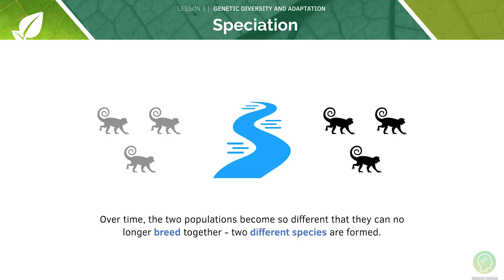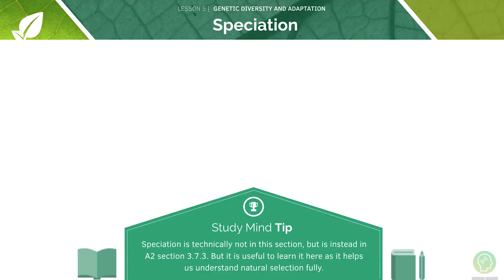Over time, the two populations become so different they can no longer breed together, and two different species have been formed. Speciation is technically not in this section but is instead in the A2 section — however it's useful to learn it here as it helps us to understand natural selection fully.